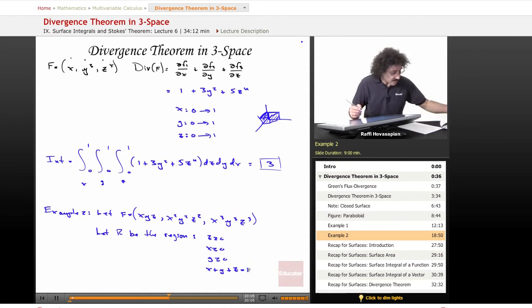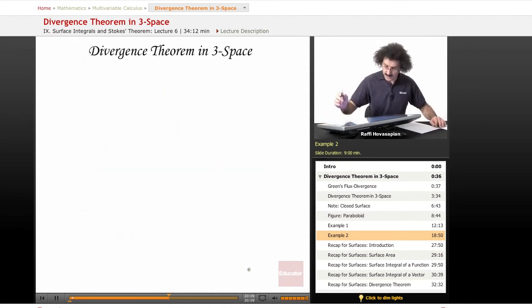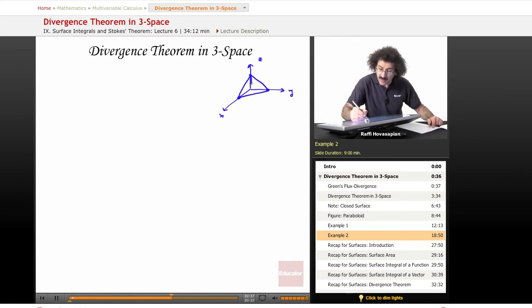When you put all of that together what you have is this following region. It is the pyramidal region in the first octant. Let me draw it over here. This is y, this is x, and this is z. So what you have is that little pyramid right there, made up of the yz plane, the zx plane, the xy plane, and this plane that's the x plus y plus z is equal to one plane.